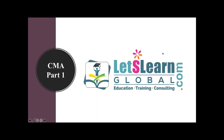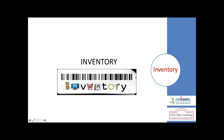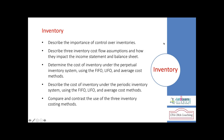Welcome to the session on CMA Part 1: Financial Planning, Performance and Analytics. We are discussing the measurement, valuation, and disclosure items. In previous sessions, we discussed inventory — what it is, how to measure it, how to value it, and how to disclose it in financial statements. We also covered inventory cost flow methods for retail and manufacturing industries, such as first in first out, last in first out, and average methods.